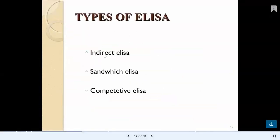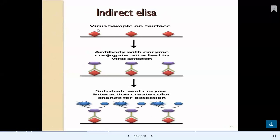There are three types of ELISA. In direct ELISA, virus samples are on the surface, and you add an antibody with enzyme conjugate attached to the viral antigen. A specific antigen-antibody reaction takes place; these antibodies attach to the antigen (virus sample). When substrate and enzyme interact, a colored compound is formed, indicating the presence of virus in the sample.